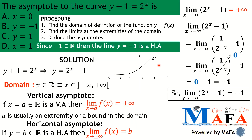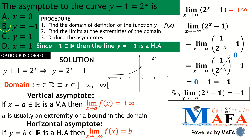Since the limit at minus infinity gave us negative one, which is a real number, we can deduce that the line y equals negative one is a horizontal asymptote. The limit at plus infinity gave us plus infinity, so we cannot conclude a horizontal asymptote from that direction. Therefore, option B — y equals negative one — is correct. Thank you for watching and see you in the next video.